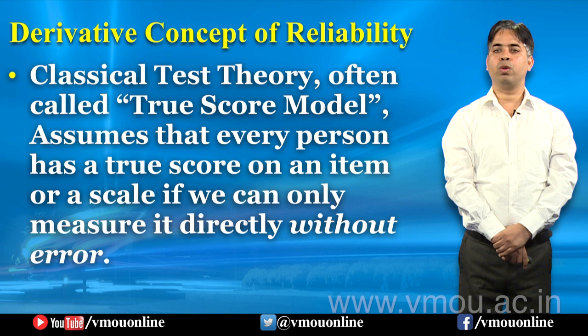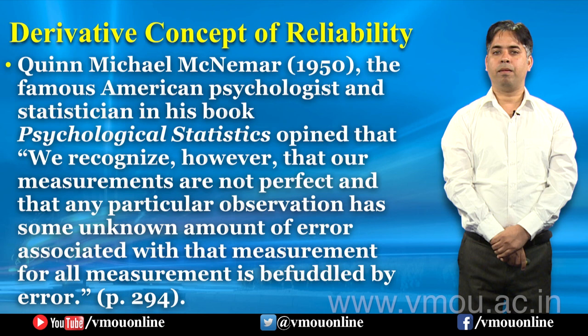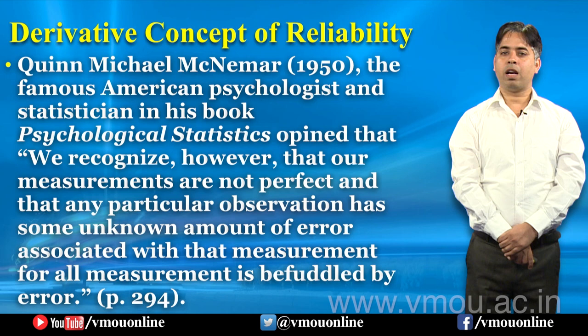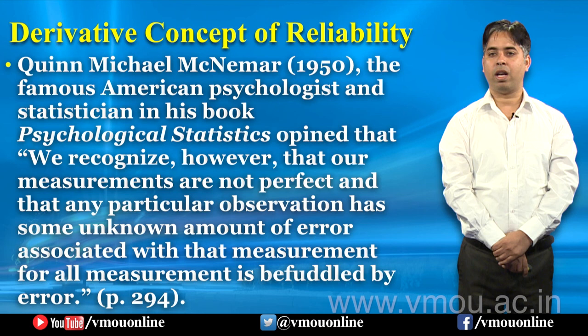Quinn McNemar एक व्यक्ति हुए हैं। 1950 में उन्होंने अपनी किताब Psychological Statistics में कहा: "We recognize however that our measurements are not perfect and that any particular observation has some unknown amount of error associated with that measurement, for all measurement is befuddled by error."